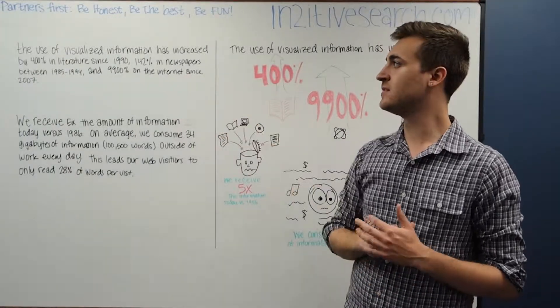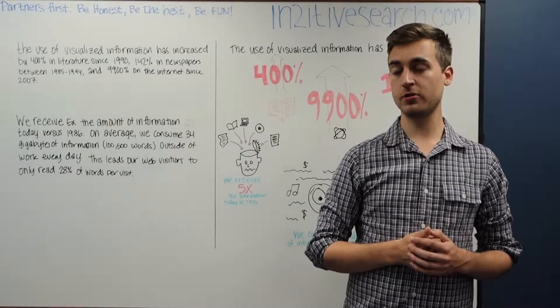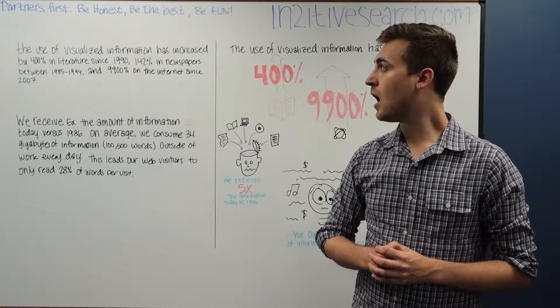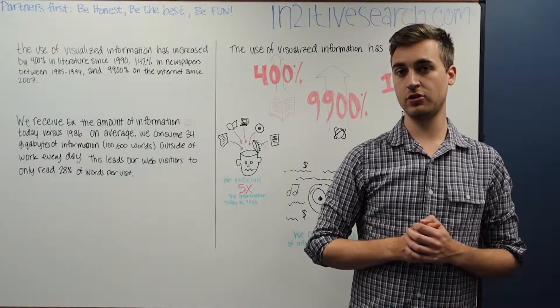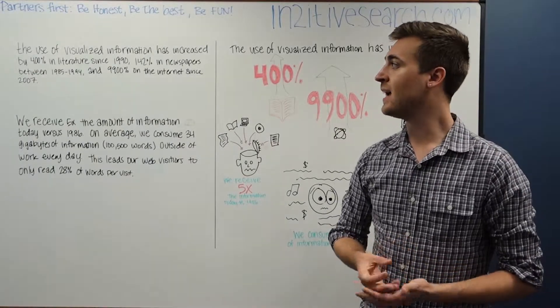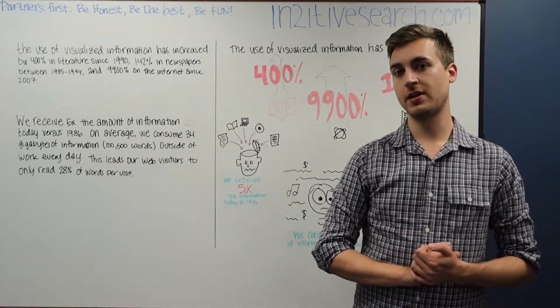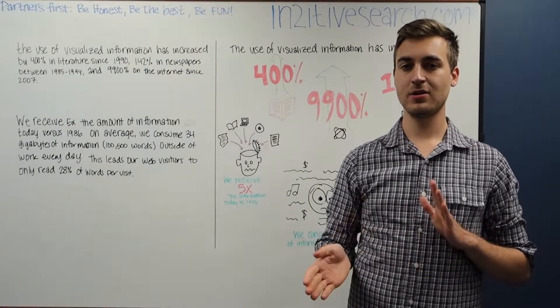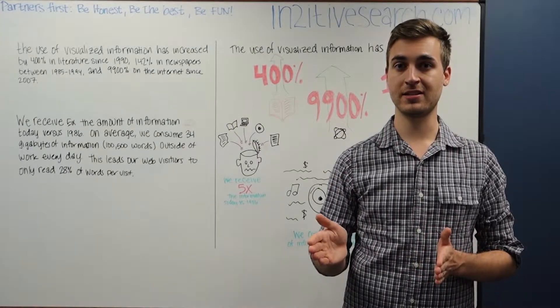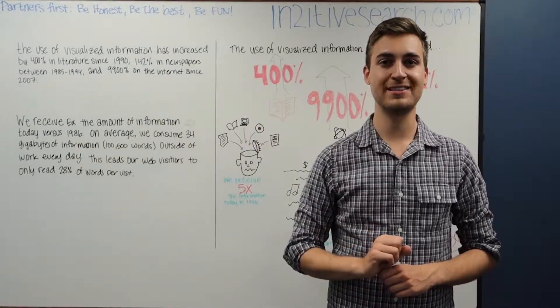So this sentence right here reads, the use of visualized information has increased by 400% in literature since 1990, 142% in newspapers between 1985 and 1994, and 9,900% on the internet since 2007. So in that short period of time between 2007 and 2014, where we are today, the use of infographics has exploded. 9,900% to be exact.